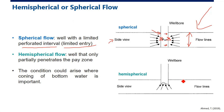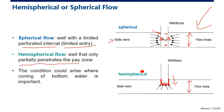If we have partial penetration — where we drill only partway through the reservoir and cement there — we will have hemispherical flow. This condition can arise when water coning is important. So if we have a water coning issue, hemispherical or spherical flow will be important to analyze.